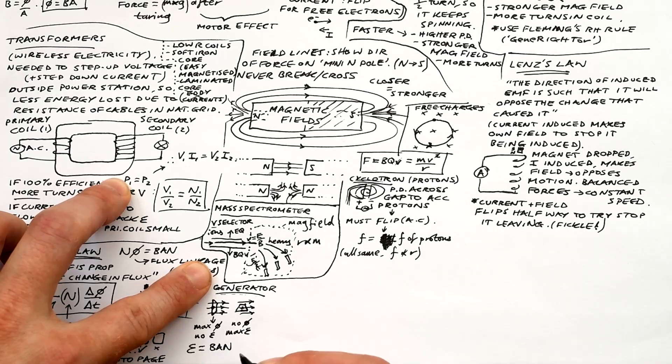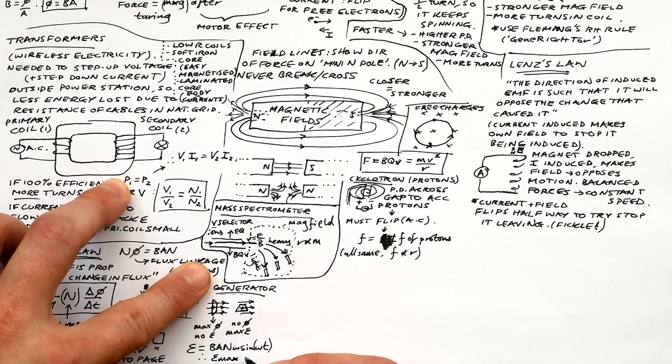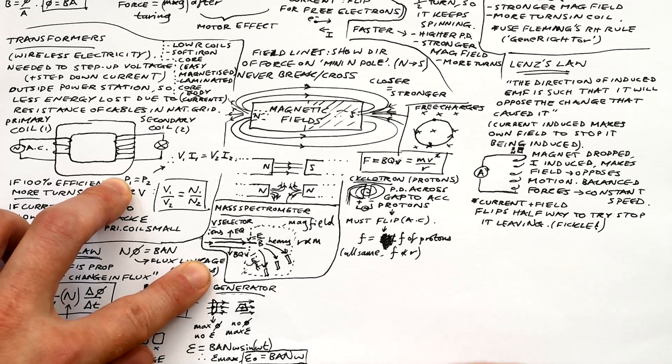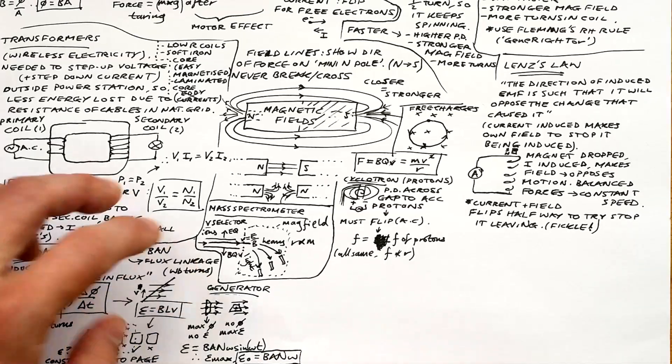EMF at any point is given by ban omega sine omega t. So therefore the maximum EMF, we can call that epsilon zero, is equal to just ban omega. That's also equal to BLV. Okay, we might have to times by n to get it for a coil with multiple turns.